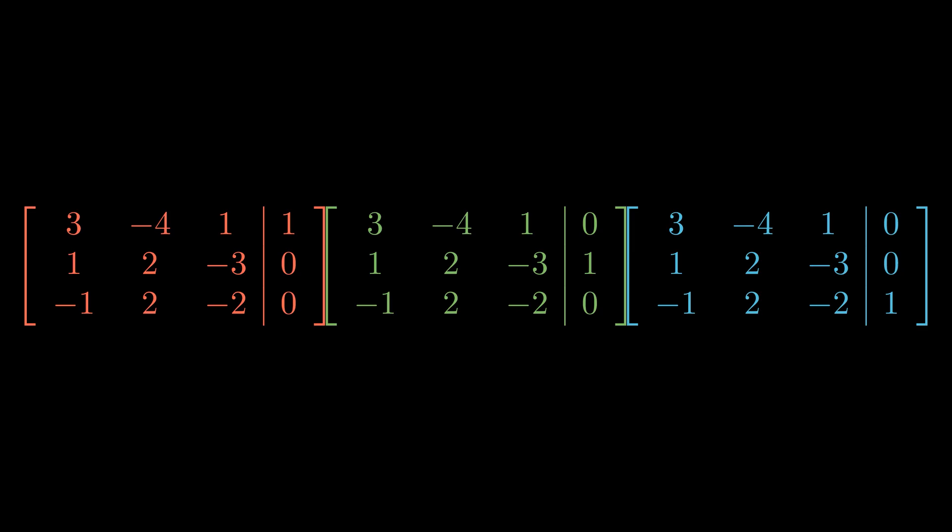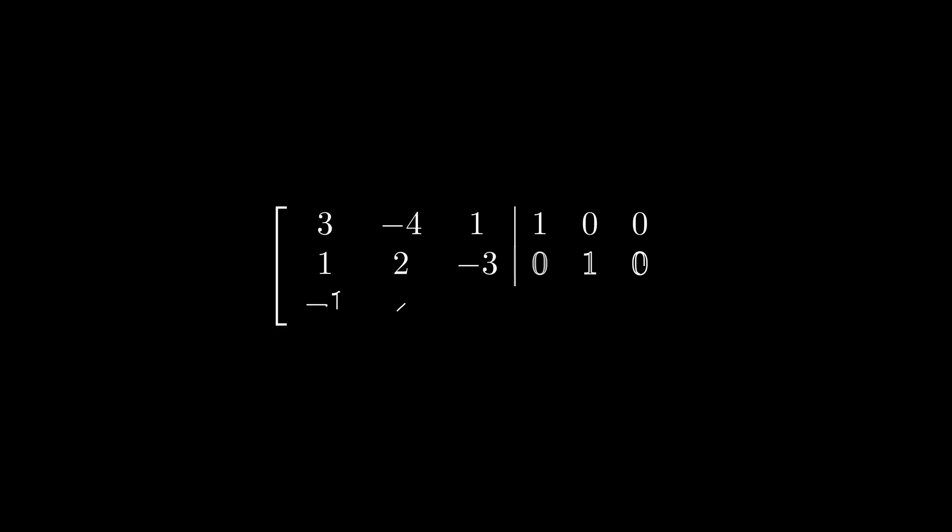If we solve each of these systems of equations, we'll have all nine variables and can fill out the inverse matrix. Importantly, the left side of all three augmented matrices is exactly the same, so we can combine them into one. The right side's first, second, and third columns represent the three systems. We'll use Gaussian elimination on both sides to find the inverse.